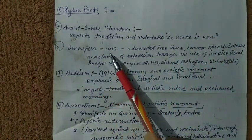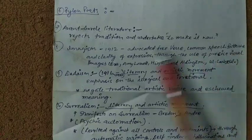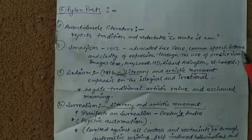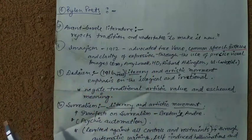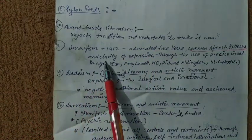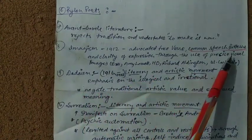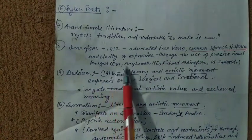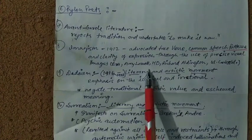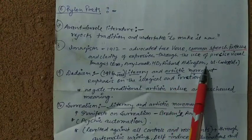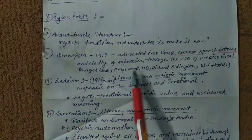Imagism came into existence in 1912. It advocated free verse, common speech patterns, and clarity of expression through the use of precise visual images. The language of poetry must come from the common language of people. Key figures include Ezra Pound, Amy Lowell, Hilda Doolittle (HD), Richard Aldington, and William Carlos Williams.